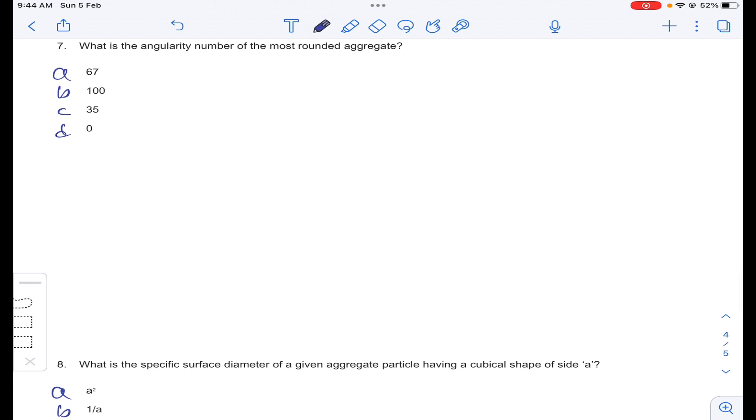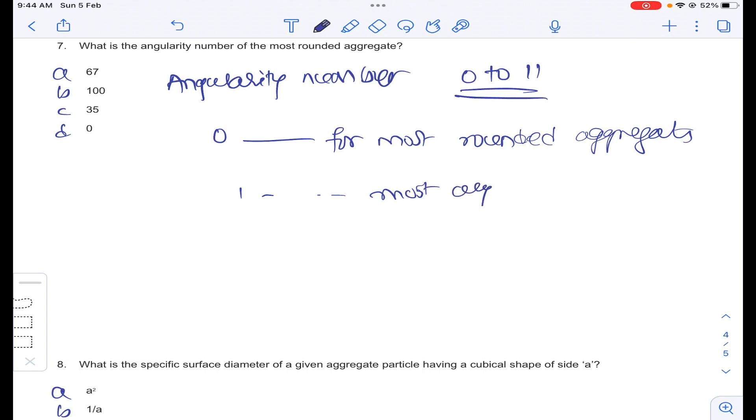What is the angularity number of most rounded aggregates? Generally, angularity number varies from 0 to 11. That is 0 for most rounded aggregates and 11 for most angular aggregates. And in between 0 to 11, the shape of the aggregates will be changing from rounded to angular in shape. For complete rounded aggregates, answer D, angularity number is 0 for question number 7.